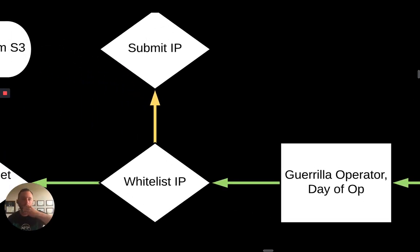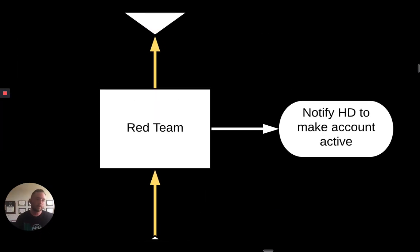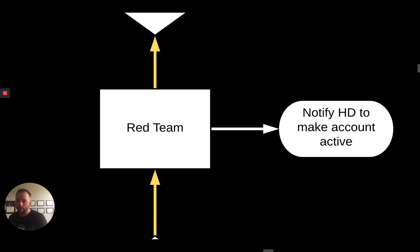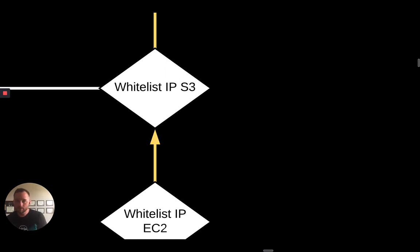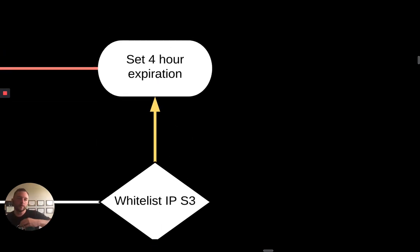Now you need to schedule an arms delivery — which you have done — so we go to the second phase of the flowchart. Yes, the arms delivery is scheduled. The day of the op, the gorilla gives you an IP address. You as the red team submit this IP address for whitelisting. You notify Helpdesk to make the account active. There are automation steps in here all over the place — the more you can automate this with Lambda or whatever, the better. You notify Helpdesk: 'I need you to make this account active in an hour or 30 minutes.' Then you go to EC2 and whitelist that IP in the security groups. Then you go to S3 — you can either whitelist the IP in S3 or generate a pre-signed URL and give that to the gorilla so they can pull down their target package. Maybe that pre-signed URL only lasts four hours, which is what we said anyway.